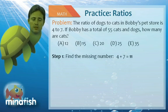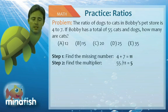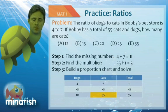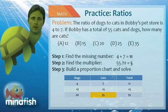The next thing we do is divide 55 by 11, essentially saying we need 5 sets of 11 to get to 55. And lastly, we just multiply the 4 by 5 to get 20 dogs and the 7 by 5 to get 35 cats. And since we want the number of cats, the answer here is E, 35.